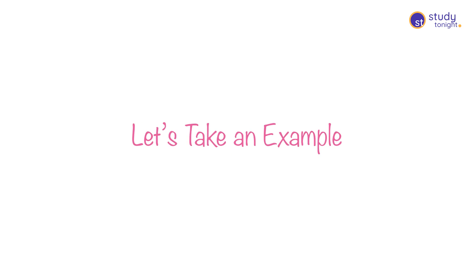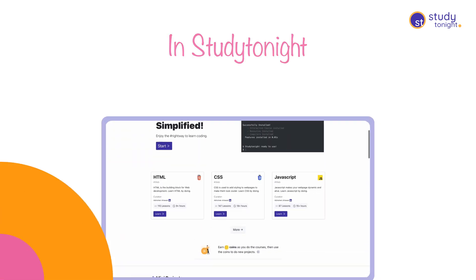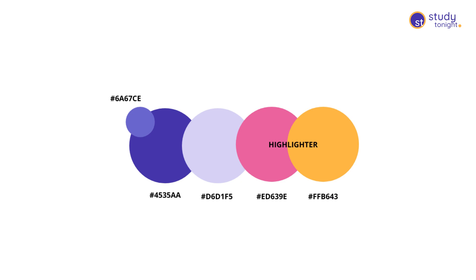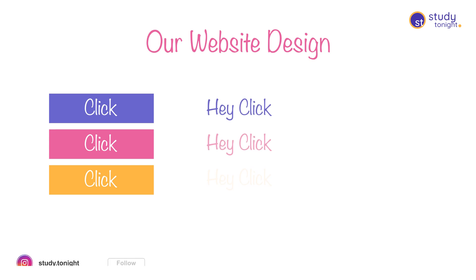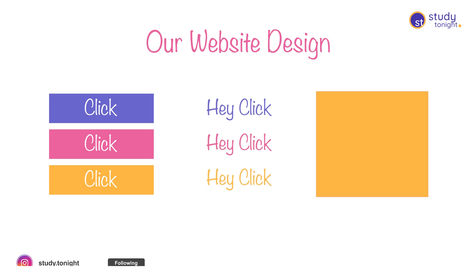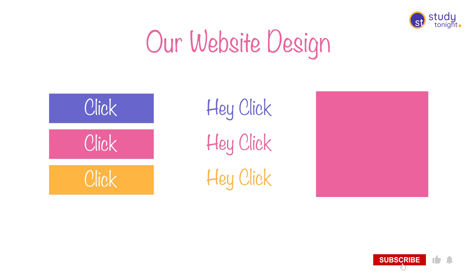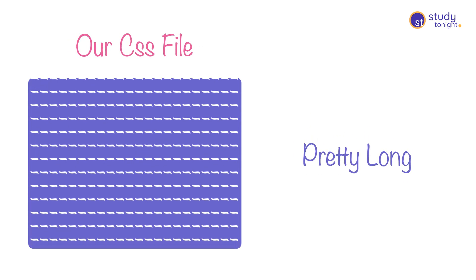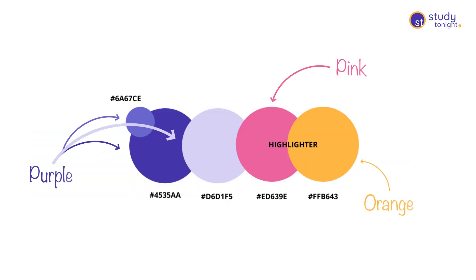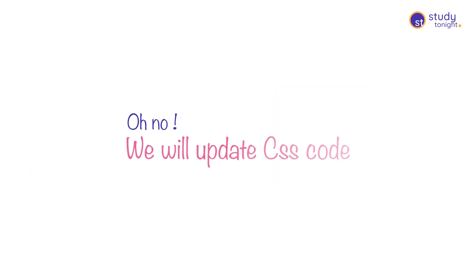Let's take an example to understand this. In Study Tonight's website, our primary color palette for our website and mobile application consists of purple, orange, and pink. In our CSS code we use these colors for buttons, text highlighting, different backgrounds, or anywhere we need to highlight something. A lot of places in our CSS code have hex codes for these three colors, and our CSS file is about 1000 lines of code. Now if in the future we plan on changing the shades of these colors or removing a color completely from our palette to add a new shade, we'll have to update the CSS code and it will be a huge update.